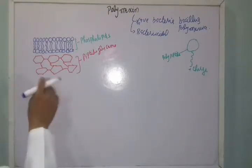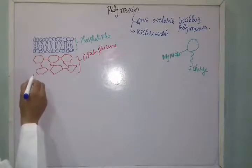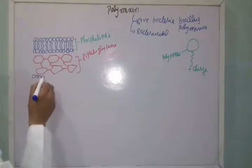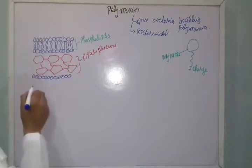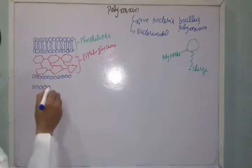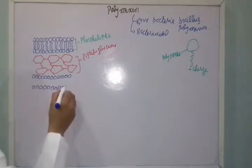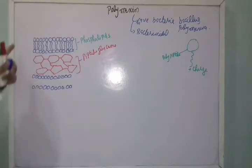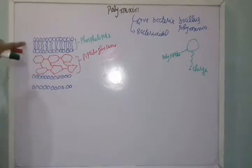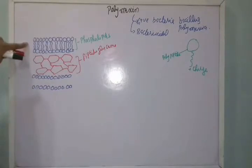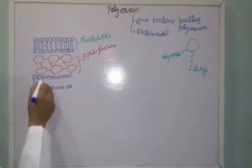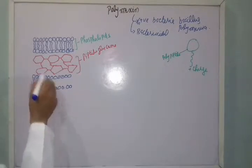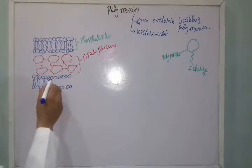After that, there is another cell membrane. One thing you should keep in mind is that gram-negative bacteria contain two cell membranes. This outer one we call the outer cell membrane, and the inner one we call the inner cell membrane.